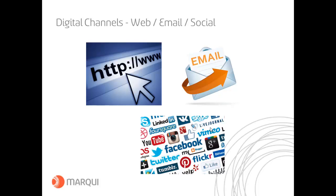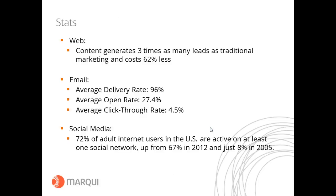In contrast, digital channels — web, email, and social. Web content generates three times as many leads as traditional marketing and can cost up to 62% less. Email has average delivery rates as high as 96%, an average open rate of almost 30%, and a click-through rate of 4.5%. Social media is not just for kids — 72% of adult internet users in the US are active on at least one social network, up from 67% in 2012 and just 8% in 2005.